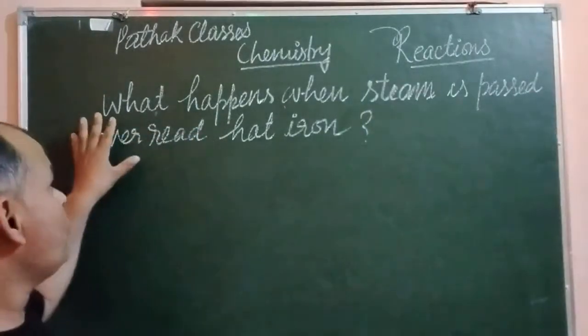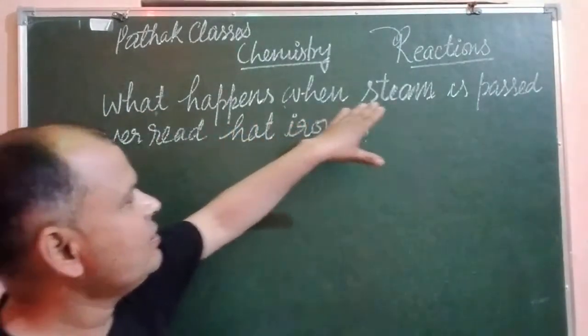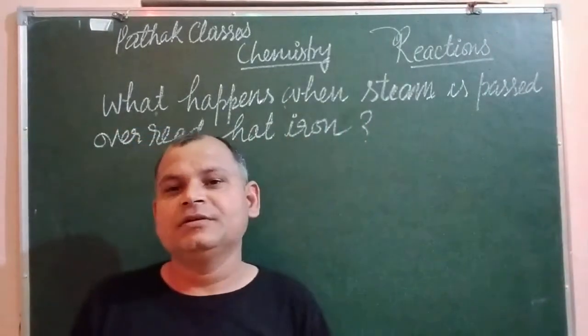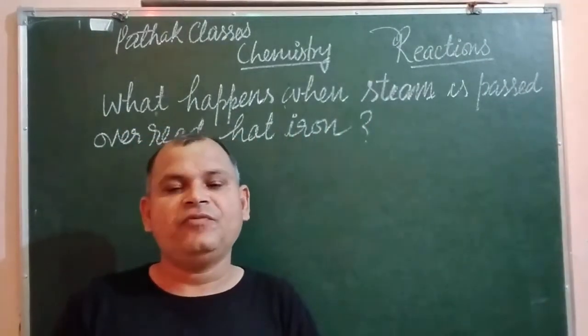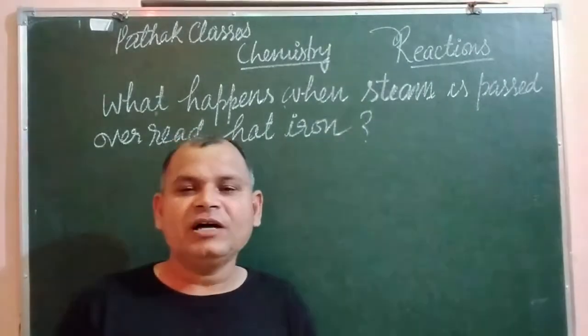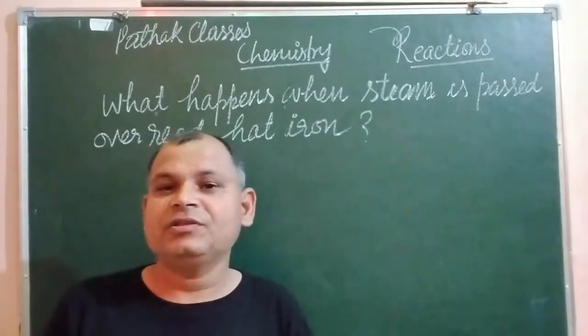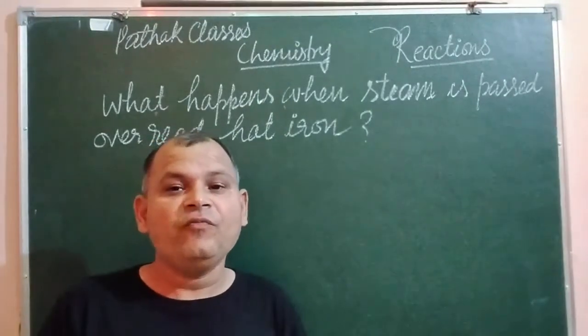So the reaction is what happens when steam is passed over red hot iron. Steam, which is a form of water when passed over red hot iron, then the iron reacts with steam and forms ferric oxide.